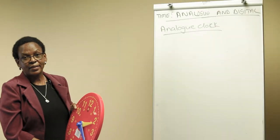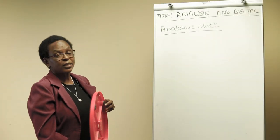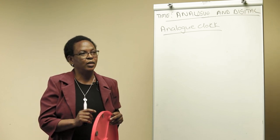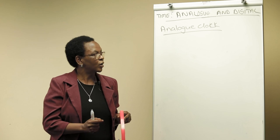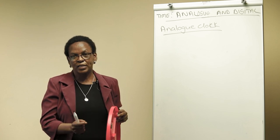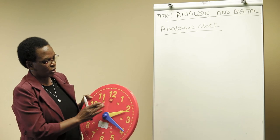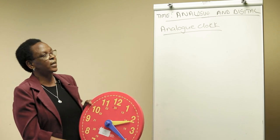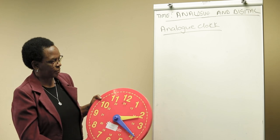Good day grade 6 learners. We have learned time in the past grades — you know the 24-hour and 12-hour annotations, you can read time, you can tell time. Today we want to look at the analog and digital time.